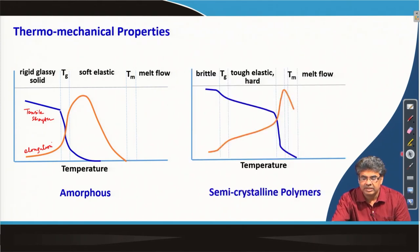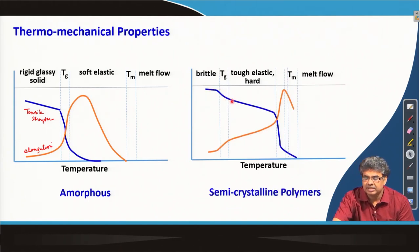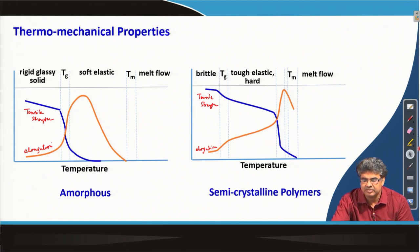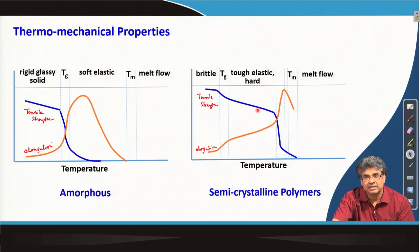For a semi-crystalline polymer, we will have a similar drop in tensile strength and elongation. We will also have some drop in tensile strength around Tg and increased elongation around Tg, but because it has crystalline regions, the decrease in tensile strength will not be as high as in the case of 100 percent amorphous polymers. This drop will depend on the extent of crystallinity present in the sample.